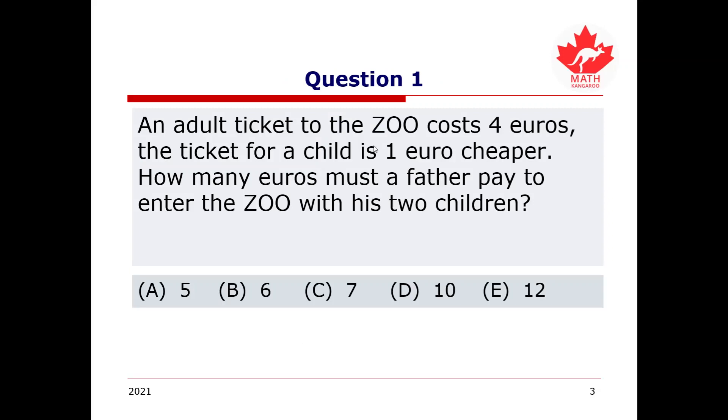Let's look at some questions here. Let's jump into our first question. An adult ticket to the zoo costs 4 euros. The ticket for a child is 1 euro cheaper. How many euros must a father pay to enter the zoo with his two children? 5, 6, 7, 10, or 12? And, this will be a good time to pause the video and try to work out the answer for yourself.